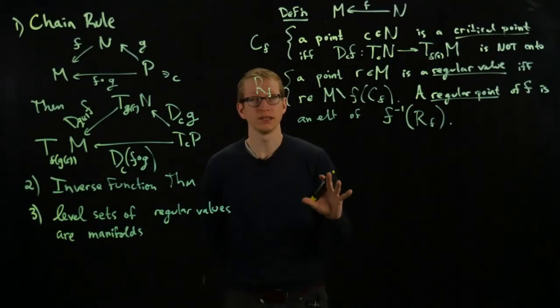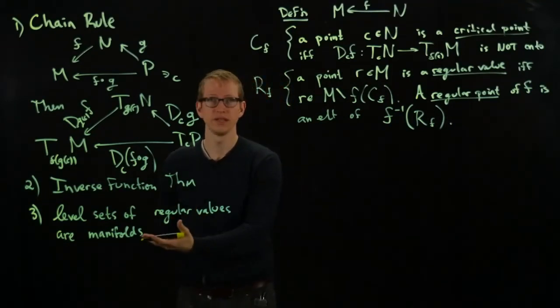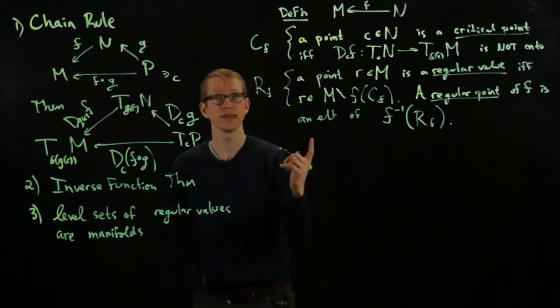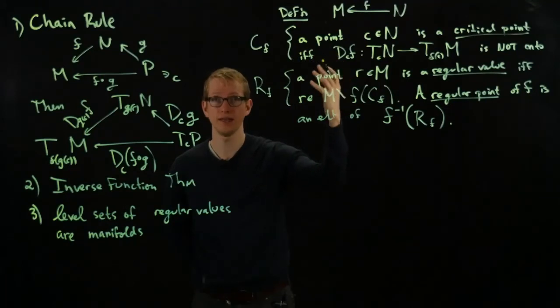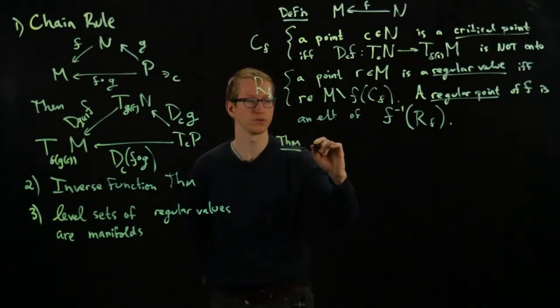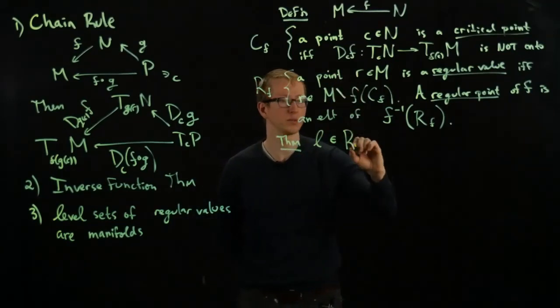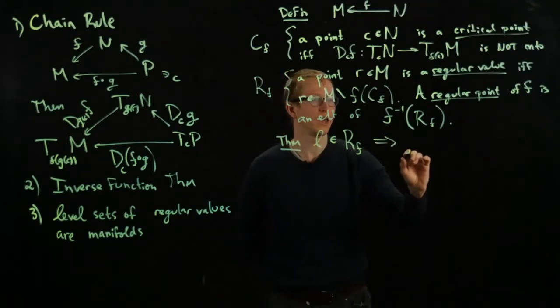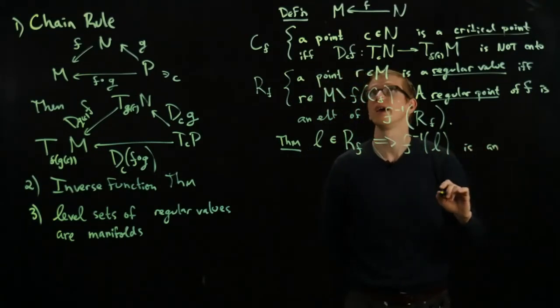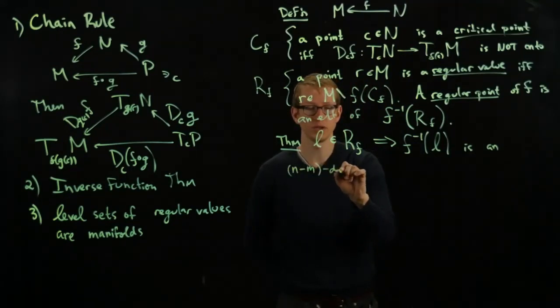And we have this fantastic theorem that's still true. Remember the level set: if I have a function F from N to M, then the level set says pick a value in the codomain. So pick an element L. So the theorem says, if L is in the set of regular values for F in the notation above, then F inverse of L is an N minus M dimensional manifold.